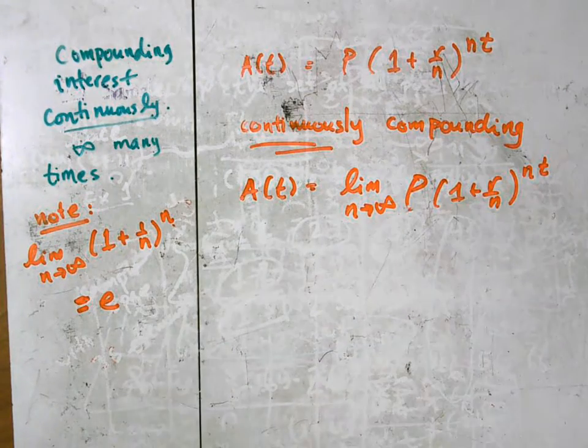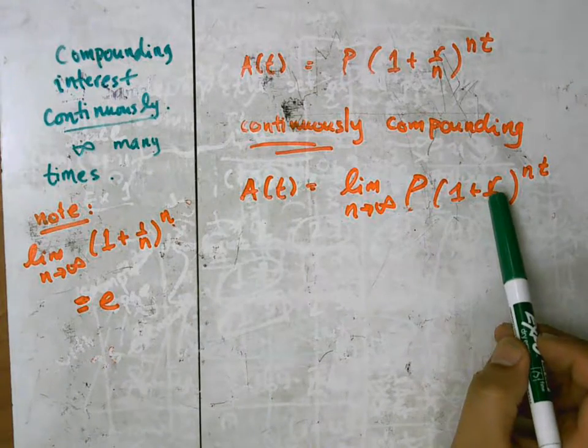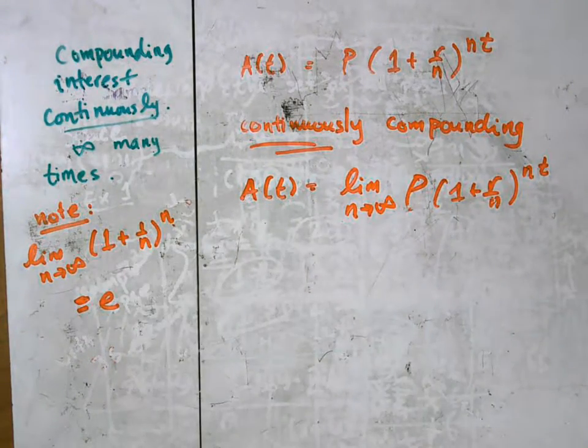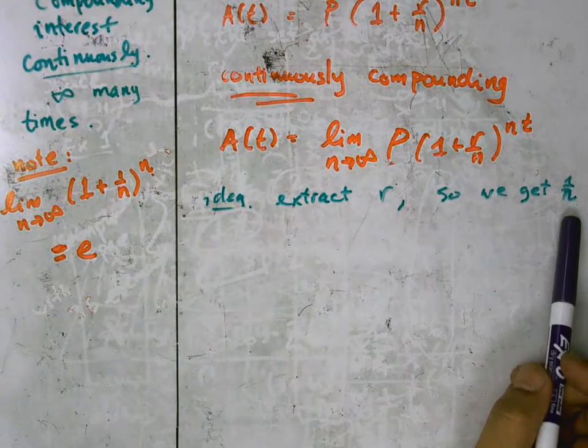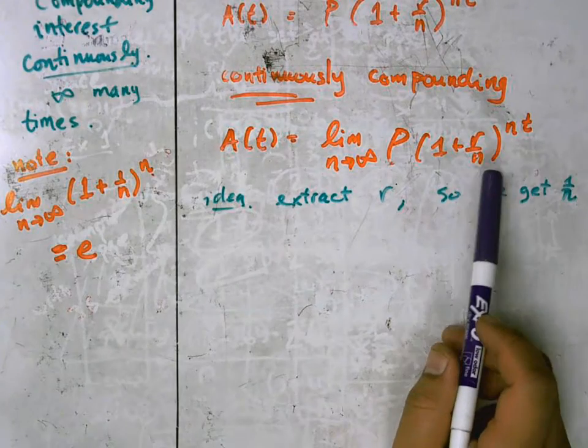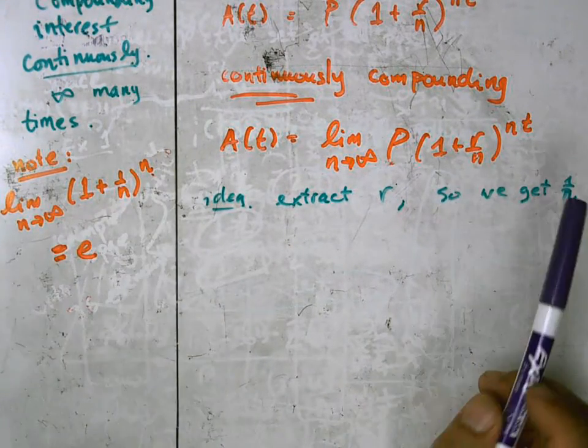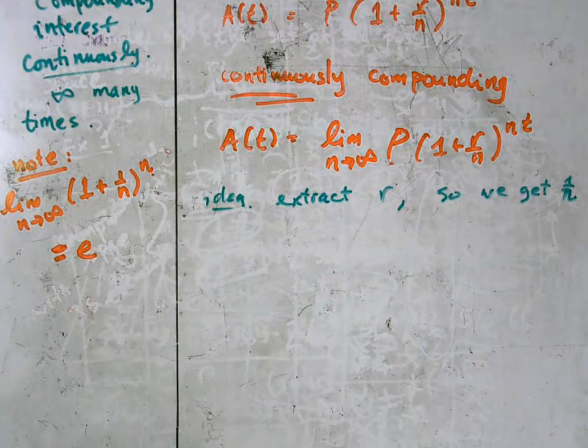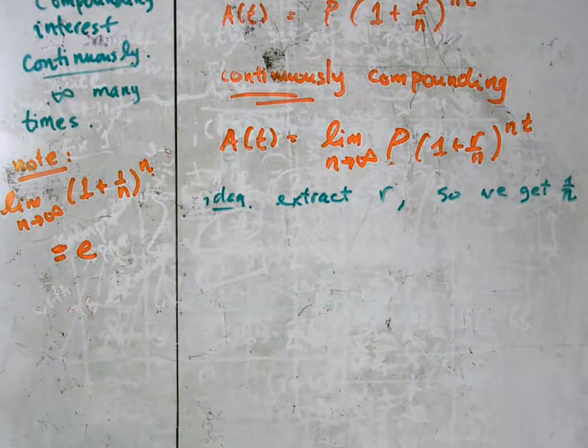And the goal here is to somehow extract r from this mess so that we could replace it with 1. So we want to extract r so that we get 1 over n in here. And once we replace this expression with 1 over n, we're basically done. But the technique for doing that isn't quite straightforward, but the good news is it isn't quite difficult either.